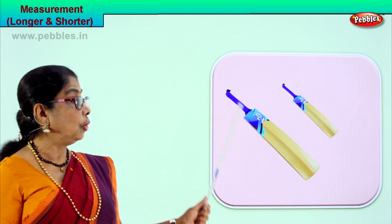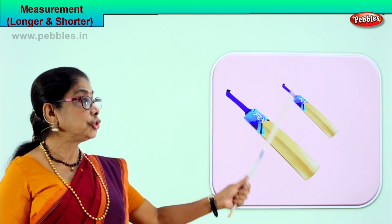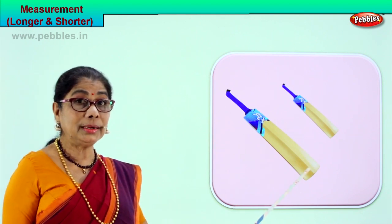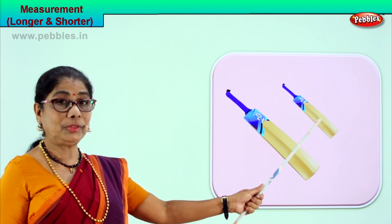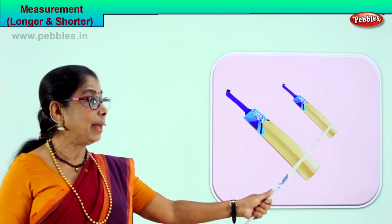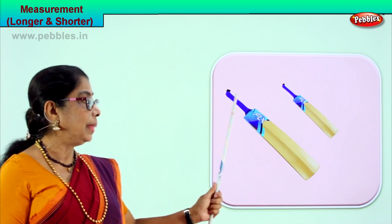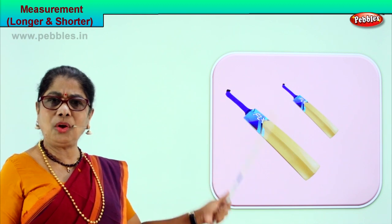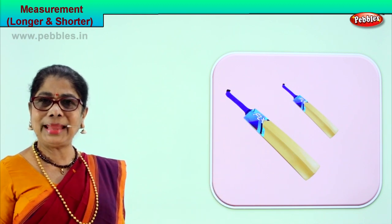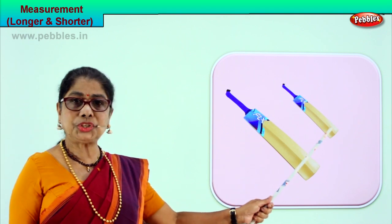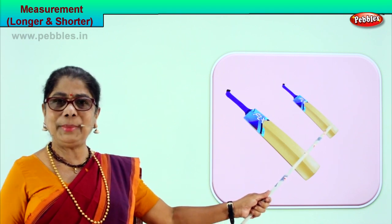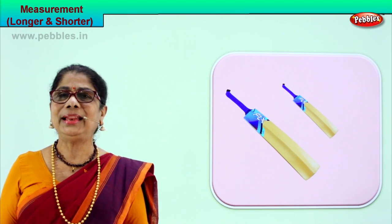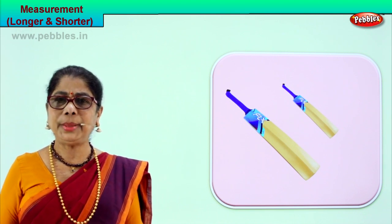We have bats here — one long bat and a short bat. We say this bat is longer than this bat, or this bat is shorter than this bat. Longer bat — get me the longer bat. Daddy says please get the shorter bat for the little baby to play. Shorter, longer.